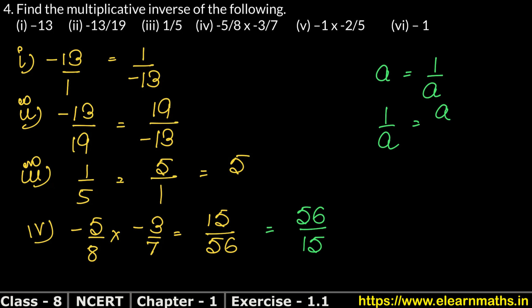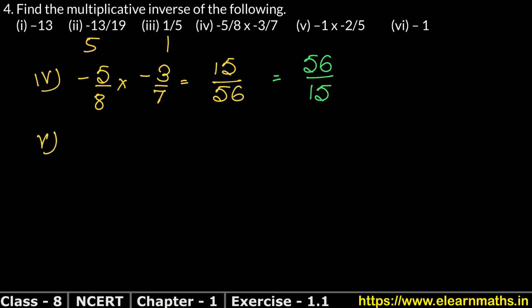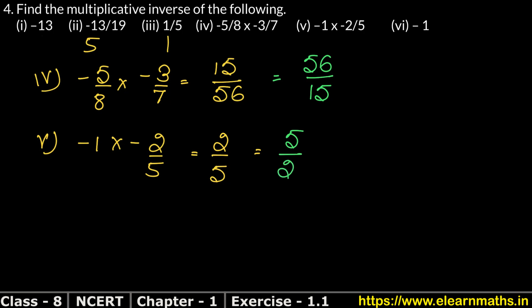The fifth part is minus 1 into minus 2 upon 5. First, let's multiply. Minus times minus is plus, and 2 times 1 is 2, so the result is 2 upon 5. Now the multiplicative inverse: the denominator value comes to the numerator. So 5 upon 2 is the answer.